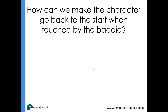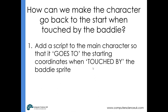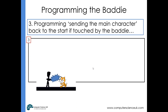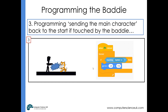To make the character go back to the start when touched by the baddie, go to the main character and add a script: forever, if touching sprite 2 (the baddie), go to a certain coordinate. This script would need to be duplicated for each baddie — sprite 2, sprite 3, sprite 4 — programming the cat to move back, for example to minus 29, 116, when touched.